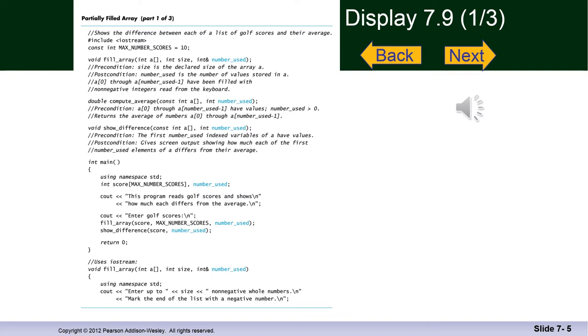Here we see the first of three slides which contain program 7.9. 7.9 is a program that shows the difference between each of a list of golf scores and their average. And it uses an integer array. It's declared as score. And it also uses the number_used indexed when being passed to the fill_array function to determine how many index locations in the array are being used with a maximum number allowable.